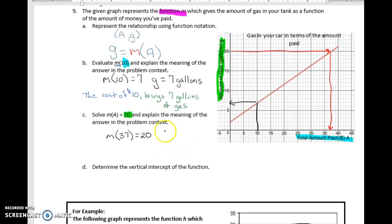And so my answer now would be M of 37 equals 20. We could also write it using the other, we can say G of 37 equals 20 if we wanted the shortened version. We can also just say, since we're finding the A, we're going to say A equals, and that answer was $37. So then when we write her statement, we say, paying $37 buys 20 gallons of gas.